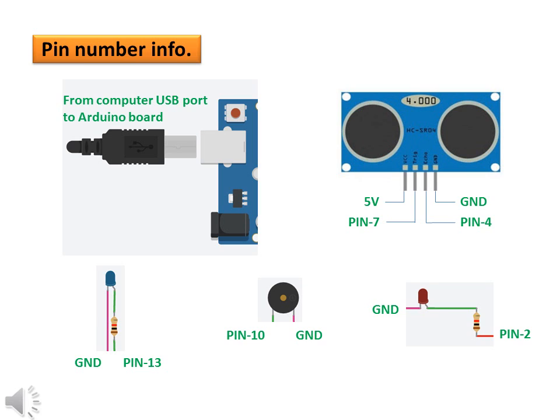Connect red LED to pin number 2 and ground. Connect blue LED to pin number 13 and ground. Connect the buzzer to pin number 10 and ground.